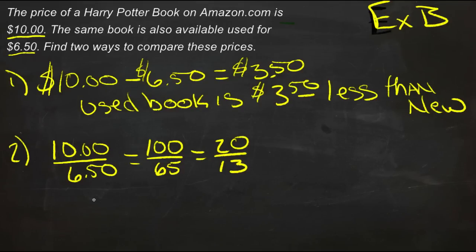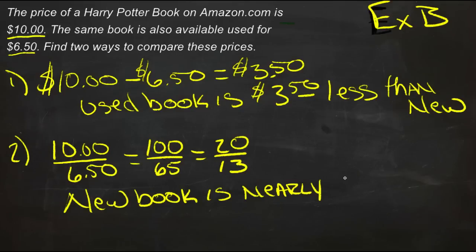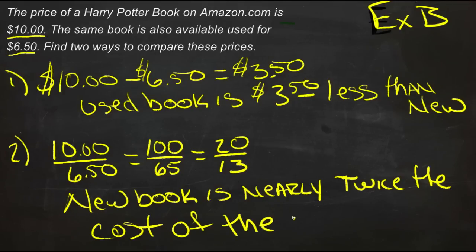Because if it was $20 compared to $10, it would be exactly twice. So we could say in this case that the new book is nearly twice the cost of the old. And that gives us two different ways to compare the information.